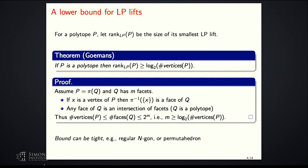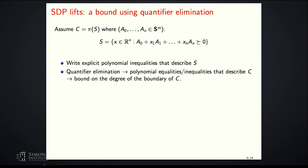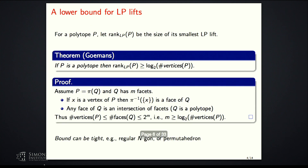How can we generalize this to get a lower bound on the PSD rank? One idea is based on quantifier elimination. Since we're working with SDP lifts and convex bodies, we need a notion other than the number of vertices. The relevant notion is the degree of the boundary of the convex set: the smallest degree of a polynomial that vanishes on this hypersurface. Using results from quantifier elimination, we can get an upper bound on the degree of the boundary of C.